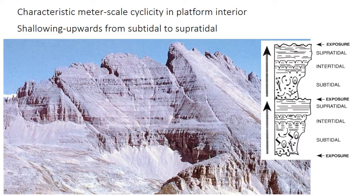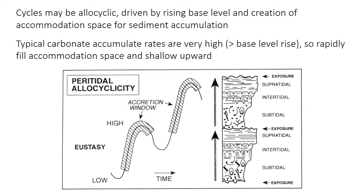A distinctive feature of carbonate sediments — platform sediments in particular — is the formation of characteristic cycles that are a meter or a couple of meters in thickness. The Triassic Latemar platform from northern Italy in the Dolomites is the most famous example, but meter-scale cyclicity shallowing upward from subtidal through supertidal is widespread in many carbonates. Given the widespread occurrence of these similar-looking meter-scale cycles, what causes them? There are potentially allocyclic and autocyclic reasons for these cycles.